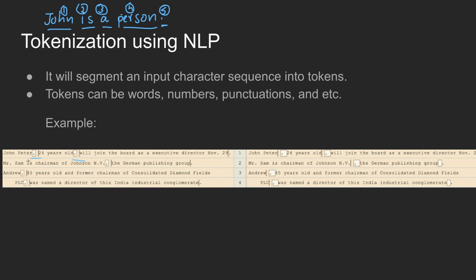If you look at this sentence, there are spaces, extra spaces, and special characters. For example, there are extra spaces, commas, and numbers like 29. There are names, abbreviations like N.V., Andrew, and PLC. This is the actual original sentence and this is what we have to handle with tokenization.